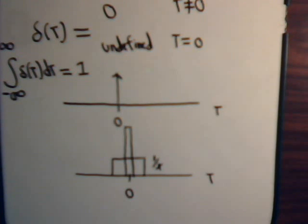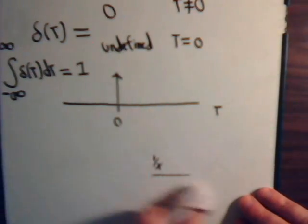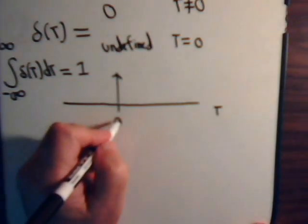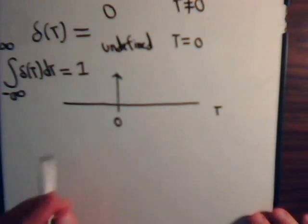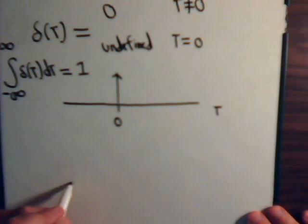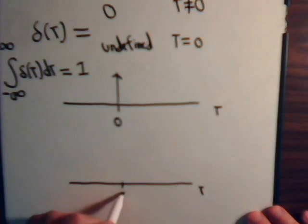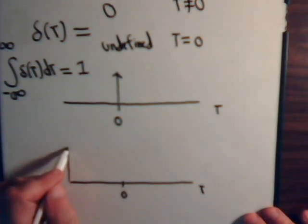And we also, back when we introduced the Dirac Delta function, we said that another common function that's used to approximate it is the Gaussian distribution. Here can be 0. This can be f of t.